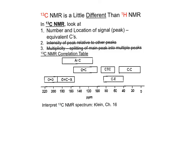Carbon-13 NMR is also common. It's a little bit different than proton NMR — we can look at carbon-13 NMR to determine the number of equivalent carbons only.